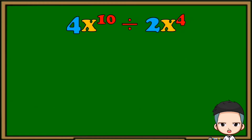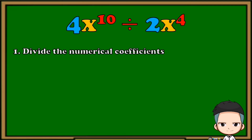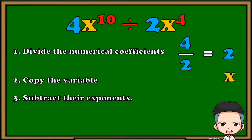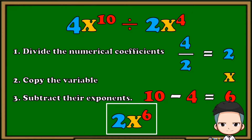Let's try this: 4x raised to 10 divided by 2x raised to 4. First, divide their numerical coefficients — 4 divided by 2 is equal to 2. Next, copy the variable, then subtract their exponents. The final answer is 2x raised to 6.